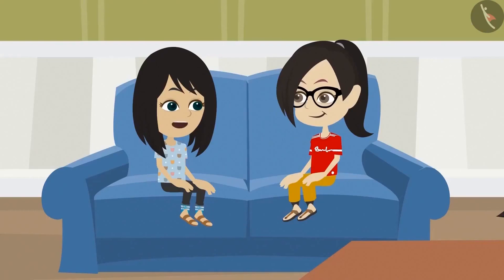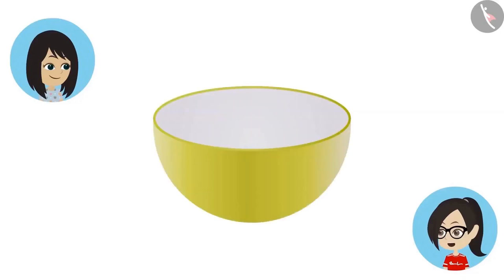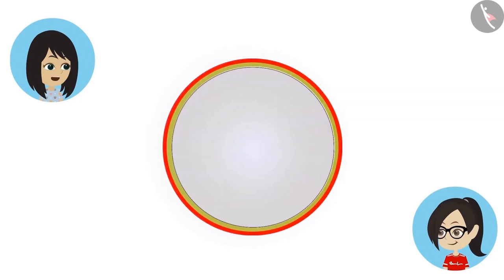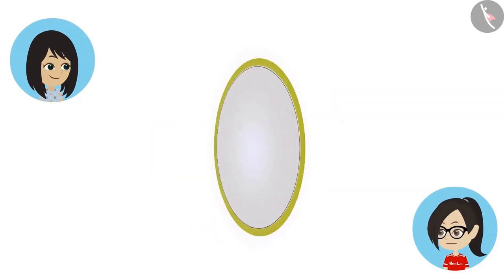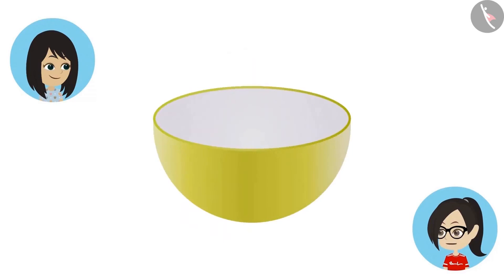Like in rangoli, mummy's saree and the design on the gate, the circle is there to enhance their beauty. Whereas for the wheels of a bicycle, center part of a fan, holes in the carom board, the circular shape is an essential part. Think if the wheels of the cycle are in the shape of a square — how will we ride it? Look at this bowl. This too has a circular shape. Looking at it from the top, it is. But even from the front, it looks like it is made in the shape of a circle.